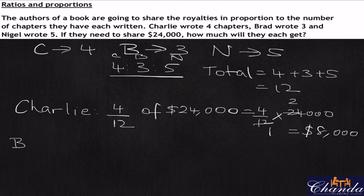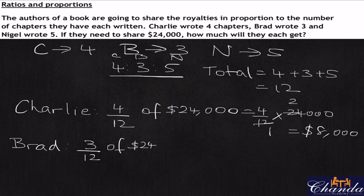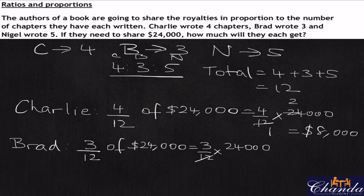Then we are looking at Brad. Brad wrote three out of the twelve, so three out of twelve of $24,000. Three over twelve times 24,000: twelve into twelve is once, twelve into twenty-four is twice, three times two thousand is $6,000. So $8,000 and $6,000 gives us $14,000.